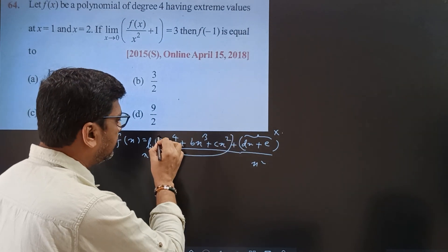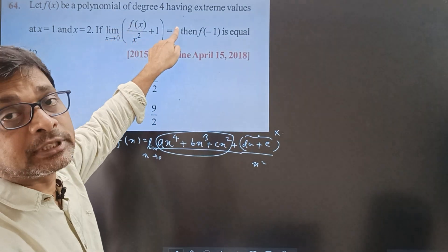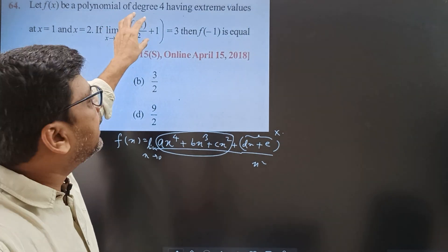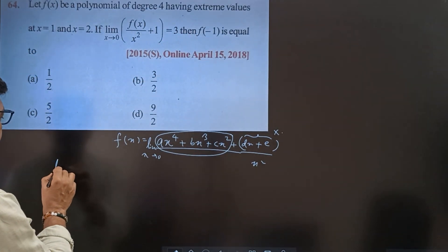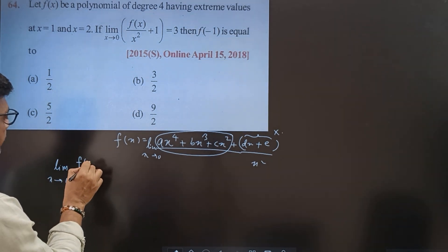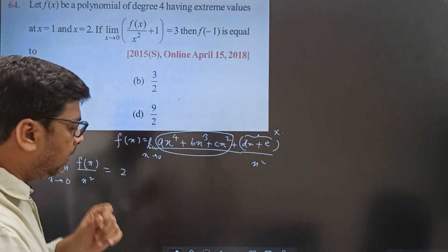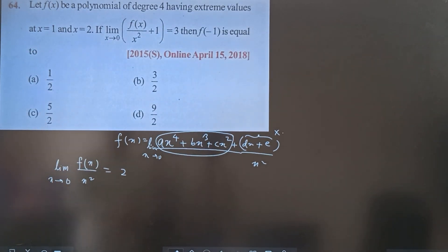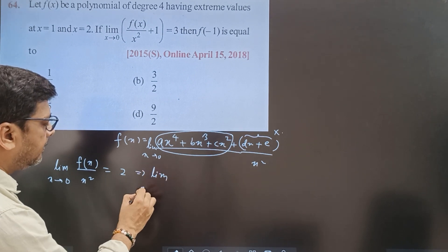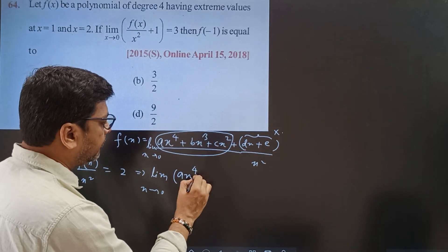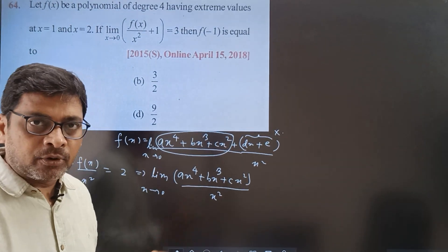You can take the f(x) here. The limit x tends to 0, f(x) by x square plus 1 is equal to 3, so the value will be equal to 2. So you can transfer the total 3, so you can have the total limit. Limit x tends to 0, f(x) upon x squared.